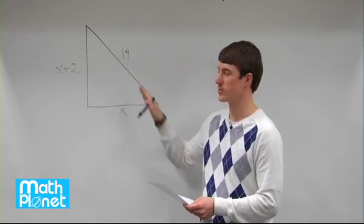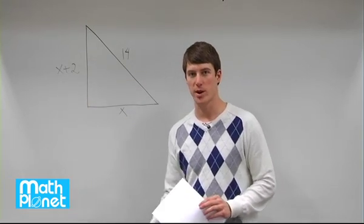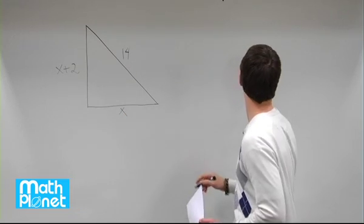We want to know how long each side of this triangle is. To do that, we need to figure out what this variable x is. We don't know what that is right away, but we can use Pythagorean Theorem to find out what that might be.